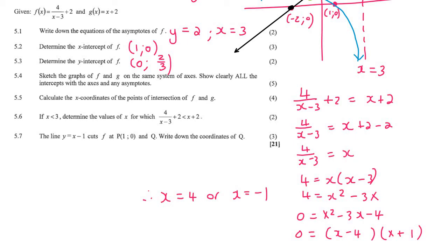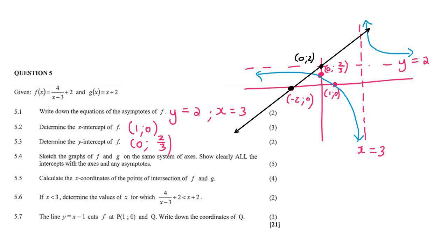Now you don't have to find the y values because they've only asked for x. And those answers that we got make sense. Because this is x equals 4 and this would be x equals minus 1. Question 5.6.